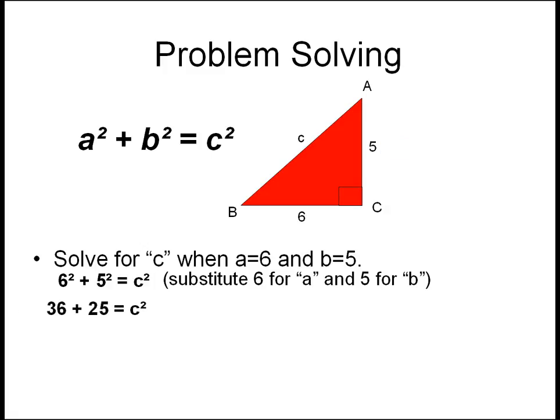36 plus 25 equals C squared. We find that 6 squared equals 36 and 5 squared equals 25, then add them. 61 equals C squared.